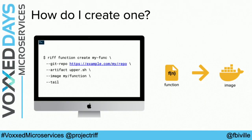So how do you create one? RIF comes with a CLI. You say you want to create a function, give it a name, then you have to tell where the sources are so we can build it. It can be remote, a Git repository, or it can be local, as I will show in the demo. In some cases, if it's not a Node.js project — like if there is no package.json or if it's not a Spring Boot app — but just a plain class like I showed, you will have to tell exactly what file you want to extract the function from. And then you can specify what image it's going to be published to. We take the sources, build it, and produce an image to be deployed.